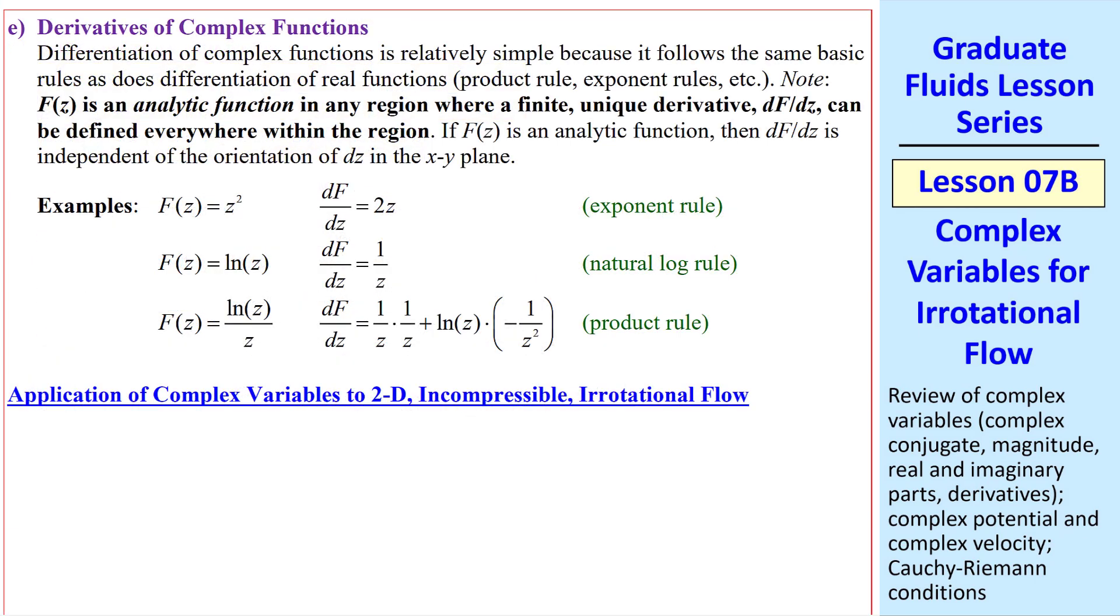We will also have to take derivatives of complex functions. Doing so is relatively simple because we use product rules and exponent rules, just like with real functions. We must define an analytic function. f of z is analytic if you can define a unique derivative within some region. It also turns out that if f of z is an analytic function, df dz is independent of the orientation of dz in the xy plane.